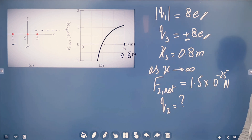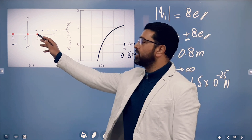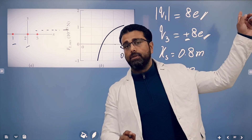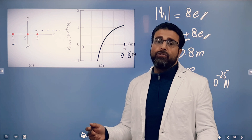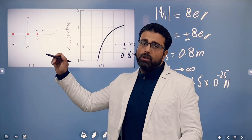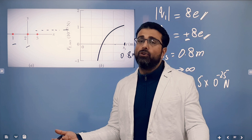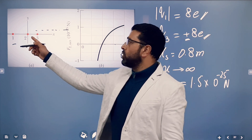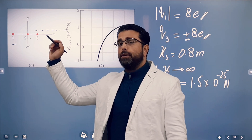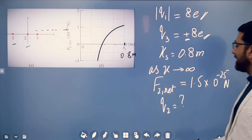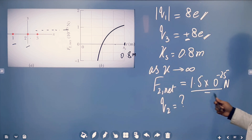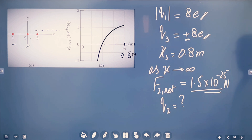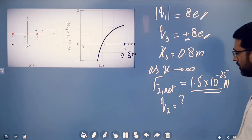As x tends to infinity — this is an important bit of information. As x tends to infinity means particle 3 is at infinity. If particle 3 is at infinity, it won't exert any force on particle 2, because if the distance is infinity, force is 0. Then the force on particle 2 will be only from particle 1. And the graph tells us that the net force at that point is 1.5 × 10⁻²⁵ newtons.